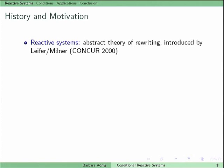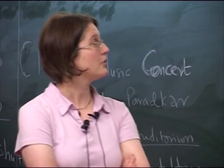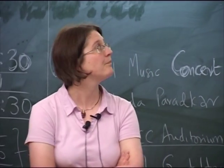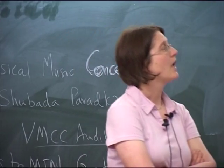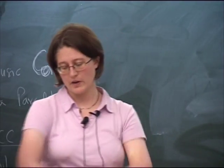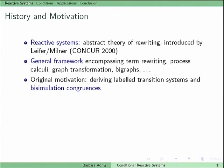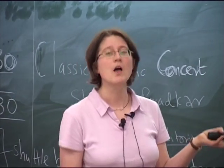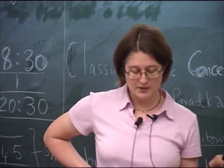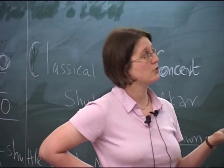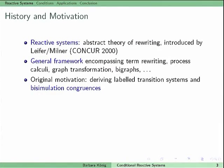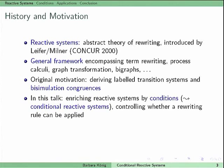What are reactive systems? It is an abstract theory of rewriting, first introduced by Leifert and Milner — there's a CONCUR 2000 paper. It's a general framework encompassing lots of things: term rewriting, process calculi, graph transformation, bigraphs also invented by Milner. The original motivation was to derive labeled transition systems for process calculi, and then also to derive bisimulation congruences and equivalences. I will not really talk about equivalences here, but about the underlying framework.